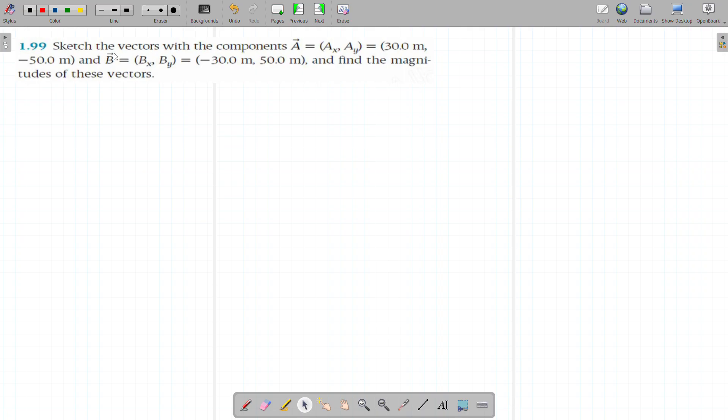Sketch the vectors with the components A = (Ax, Ay) = (30 m, -50 m) and B vector = (-30 m, 50 m), and find the magnitudes of these vectors.